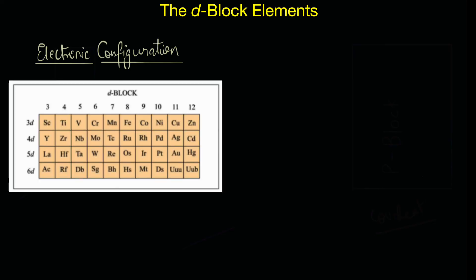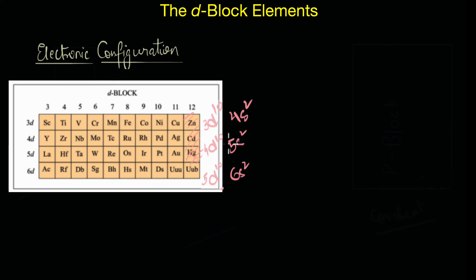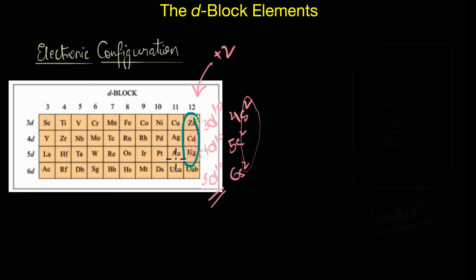Not all d-block elements are transition metals. According to the latest IUPAC definitions, transition metals are those which have an incomplete d subshell either as a neutral atom or in their ions. Because zinc, cadmium, and mercury have completely filled d orbitals — and their common oxidation state of +2 still leaves a completely filled d subshell — they are not generally considered transition metals. Even so, they are still d-block elements, and we study their chemistry along with the rest of the d-block elements.